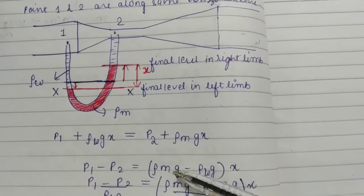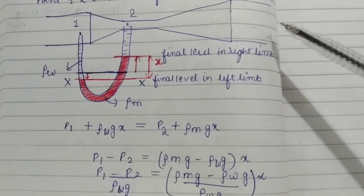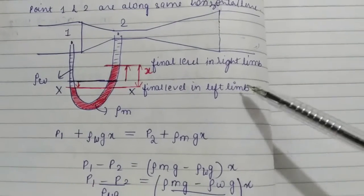Rho M is the density of mercury. Rho W is the density of water which is flowing in this pipeline. If it is oil then you can write accordingly.